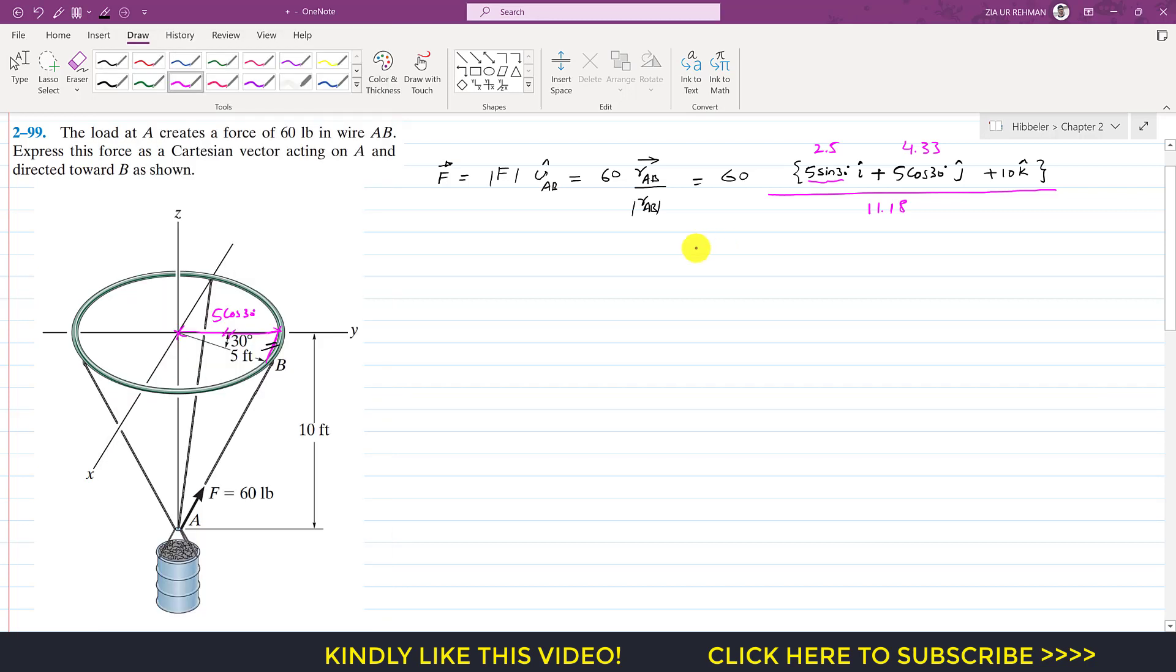So we can write this force F as 5.37 times (2.5 i plus 4.33 j plus 10 k).